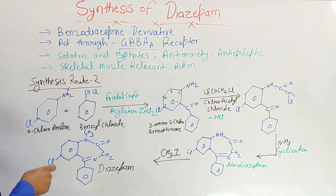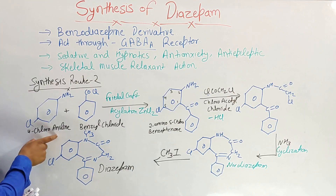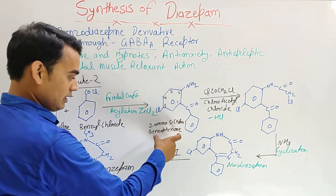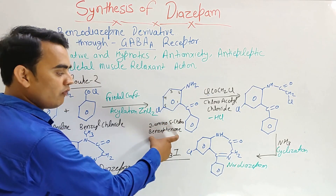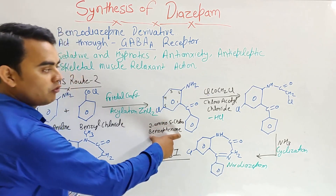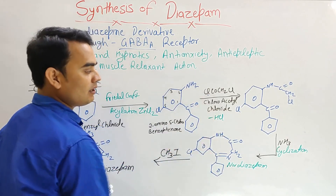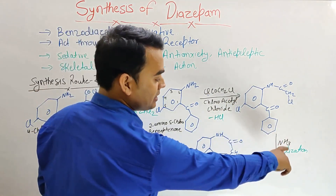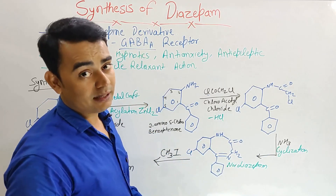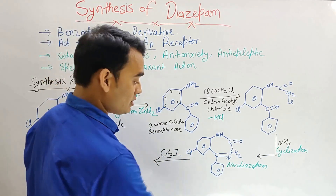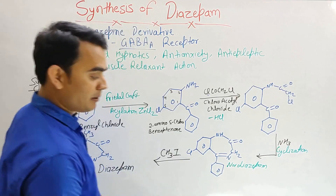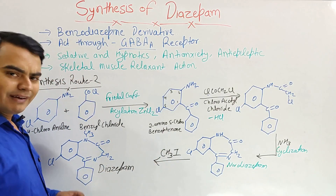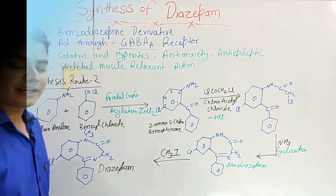Let's have a quick revision. 4-chloroaniline reacted with benzoyl chloride undergoes Friedel-Crafts acylation to form 2-amino-5-chlorobenzophenone. This reacted with chloroacetyl chloride to form an intermediate. When ammonia gas is passed, cyclization occurs to form nor-diazepam. Nor-diazepam reacted with methyl iodide forms diazepam. Very easy — I hope you liked it. Thank you.